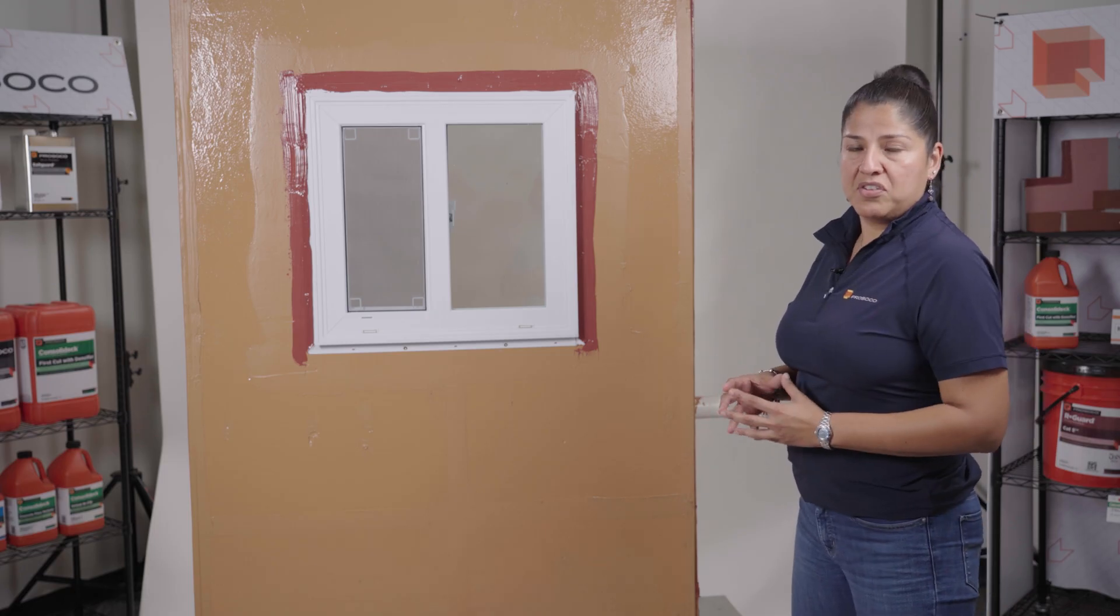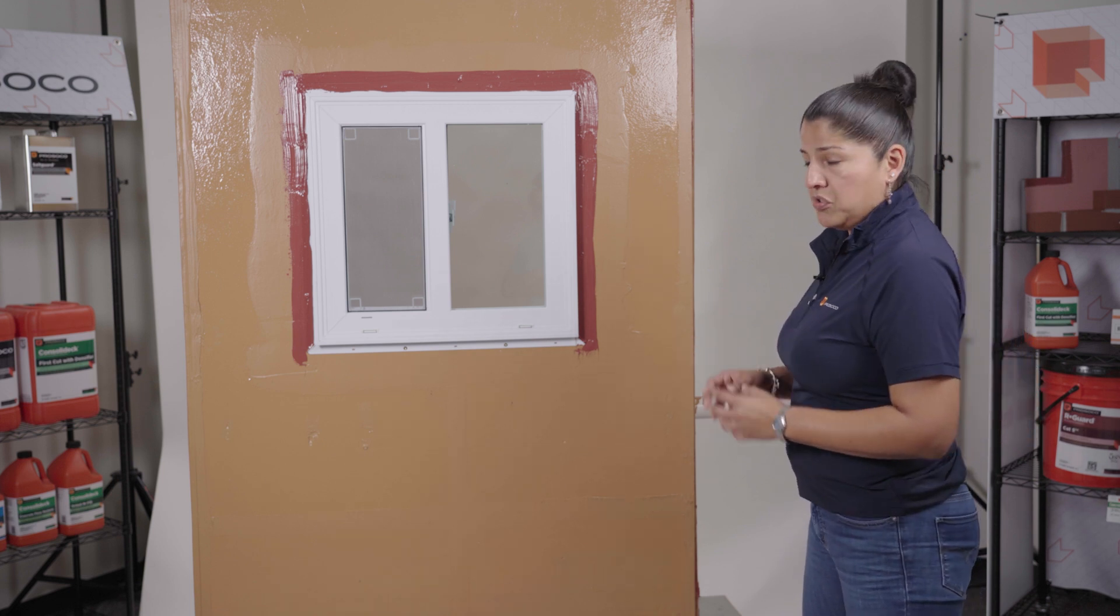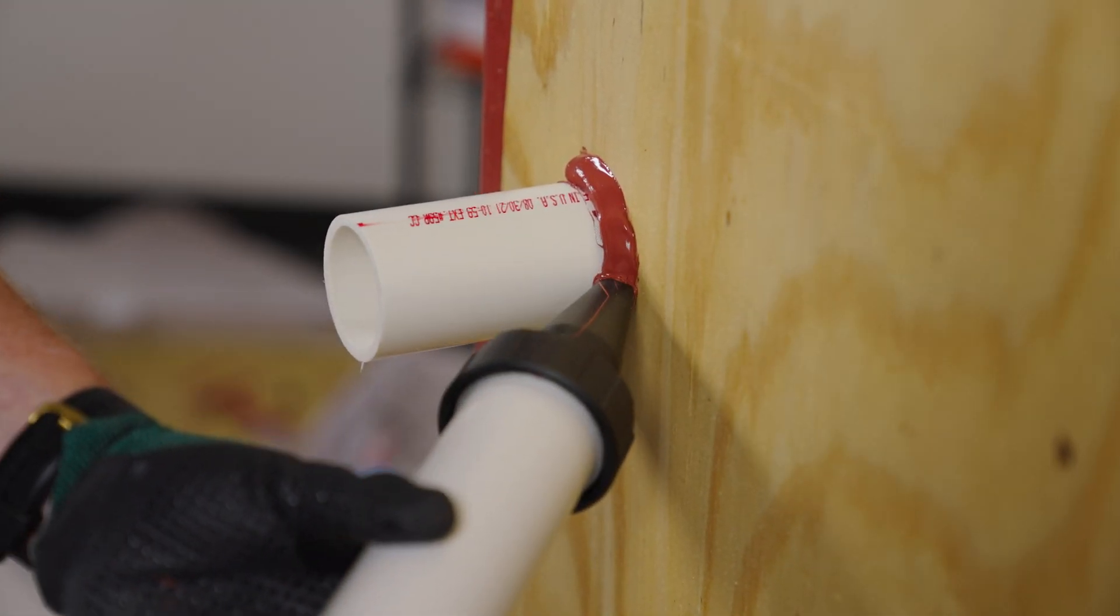When you have a penetration that you have to seal, you want to use Fast Flash gun-grade. It's the easiest product to use. When you have any gaps like that, you really should be using the gun-grade. You'd run a bead of the gun-grade around the penetration.